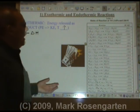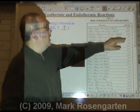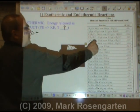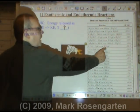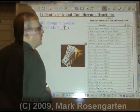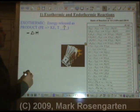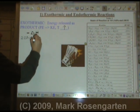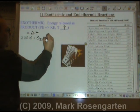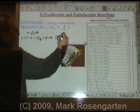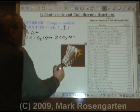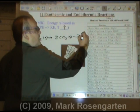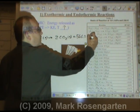What reactions are exothermic? Anything with a negative delta H. For example, the reaction 2CO gas plus O2 gas forms 2CO2 gas with a delta H of negative 566.0 kilojoules. The way you would write this is: 2CO gas plus O2 gas forms 2CO2 gas plus 566.0 kilojoules as a product.